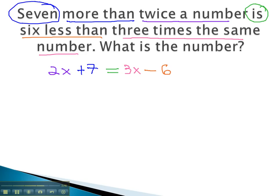After translating the pieces, we now have an equation we can solve. Balancing through the equal sign, we start by moving the variables to the same side. Subtracting 2x from both sides will give us 7 equals 1x, or just x, minus 6.